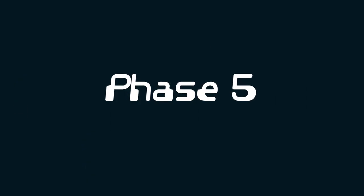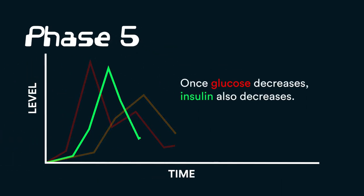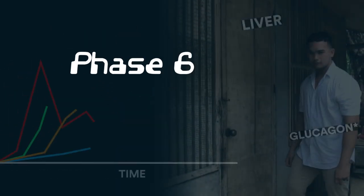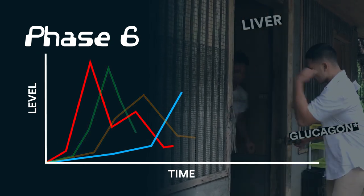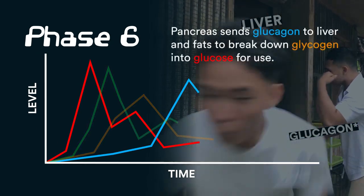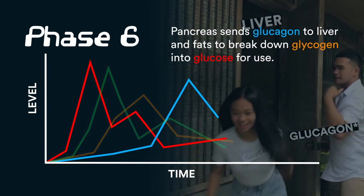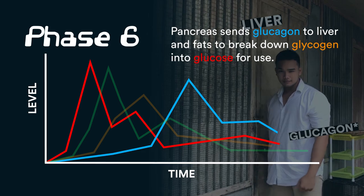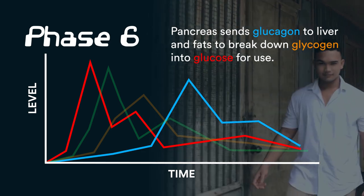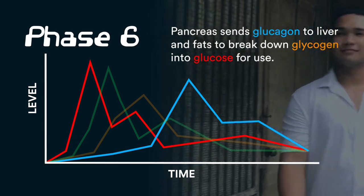Phase 5: kung munaog na ang blood sugar, munaog na sa sa ng insulin. Phase 6: Whenever our blood sugar is too low, our pancreas releases glucagon into our liver and fats para bungkagon ang baka ang glycogen into glucose para gamit nyo sa cells for energy.